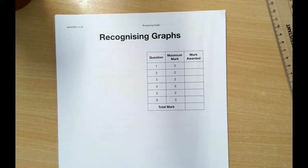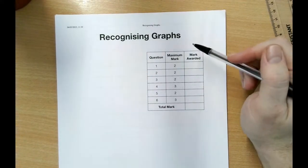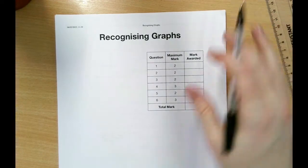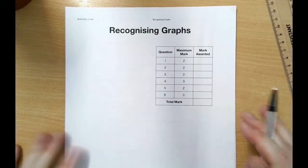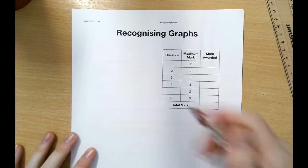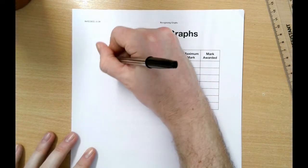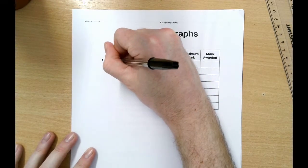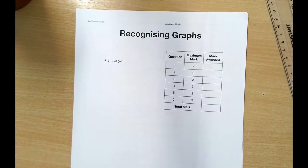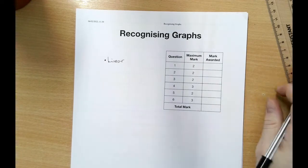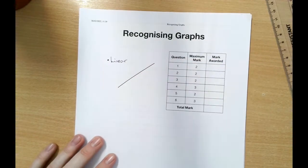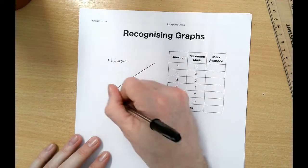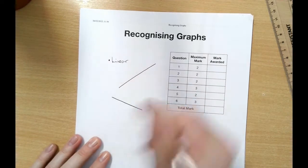This is a mini help video for the topic of recognizing graphs. There are several types of graphs you're expected to know and recognize. A linear graph is just a straight line — it can look like a diagonal going one way or another.